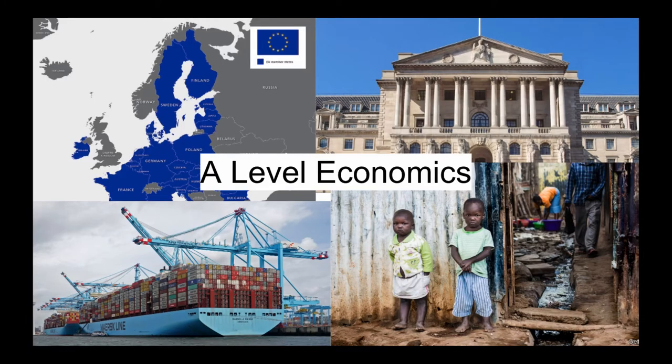Moving on to A-Level Economics — this is the second course I'm talking about today. The pictures on the slide show some of the key topics we would look at. One is Brexit, and we will be looking at trade blocks and how countries trade with each other, which you can see from the picture of the container ship. We will do a lot around international trade.